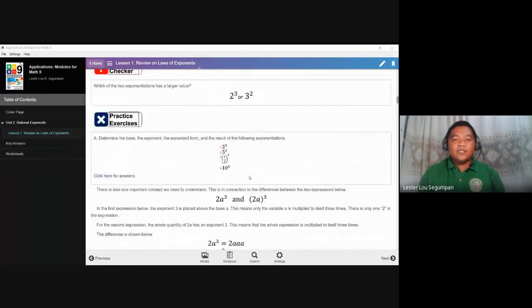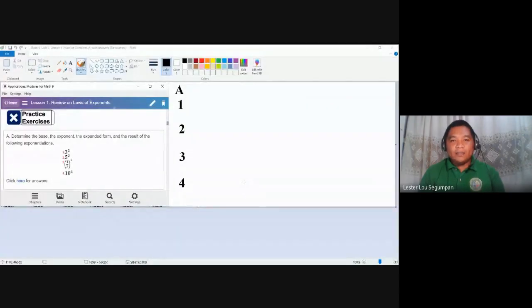We will start first with the basic concepts of exponents presented in practice exercise A. So we are tasked here to determine what is the base, what is the exponent, we will expand this form and we will take the result. And again, this is just very basic because this is very important when we deal with fractional exponents and exponential equations later on. So let me share now the screen of the paint application software. We have four items in practice exercise A. Again, we are tasked to determine what is the base of the exponentiation or the exponential notation, what is the exponent, we will expand it and take the result.